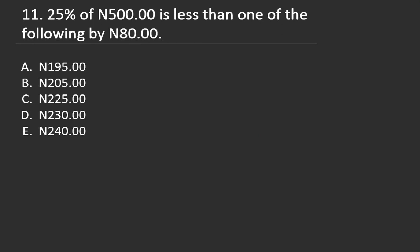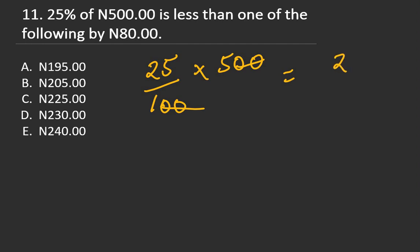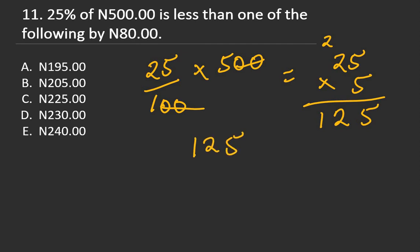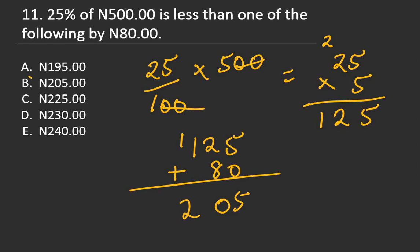Question 11: 25% of 500 is less than one of the following by 80. 25% means 25/100, times 500. Two zeros cancel, so 25 × 5 = 125. Since 125 is less than the number by 80, add 80: 125 + 80 = 205. The right answer is B: 205.